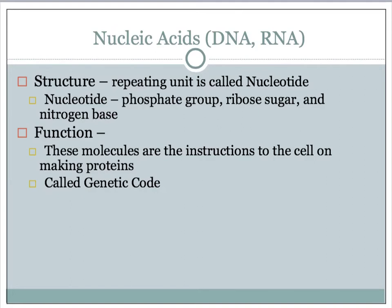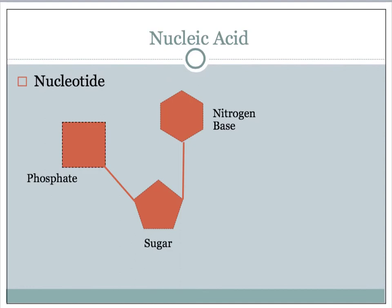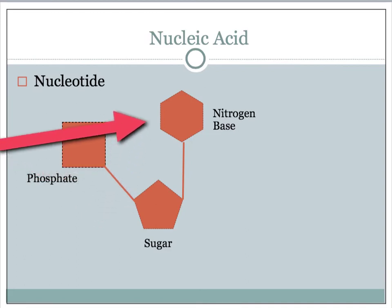Our next biomolecule are nucleic acids — so this is DNA and RNA. The structure of nucleic acid is a repeating unit called a nucleotide, and a nucleotide consists of a phosphate group, a ribose sugar, and a nitrogen base — we'll talk about this a lot in class. The function of nucleic acids: these molecules are the instructions to the cell on making proteins, also called genetic code. Here's a picture of a nucleotide — you want to draw this in your notes. You have your phosphate, your sugar, and your nitrogen base; all three of these must be present for you to have a nucleotide.